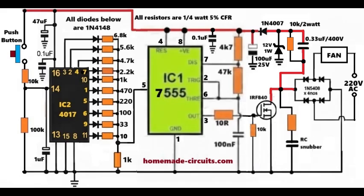Now comes the IC7555 PWM generator. This IC is configured in astable PWM mode. Pins 2 and 6 are tied together, which is standard for a 555 astable circuit. The 47K and 4.7K resistors define the basic timing. Pin 5 receives the stepped control voltage from the 4017 resistor ladder.